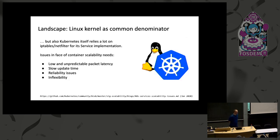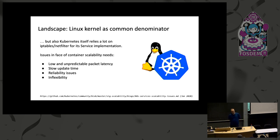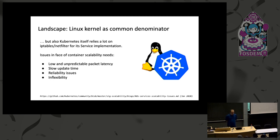Not only libnetwork, but Kubernetes also relies heavily on IPTables specifically for its service implementation through KubeProxy. There are issues in terms of scalability: low and unpredictable packet latency, because if you have many different services the way IPTables is traversed, you either hit the first rule in the best case or have to traverse all the different rules and end up at the last one. There are also slow update times because you have to replace the entire blob of rules.